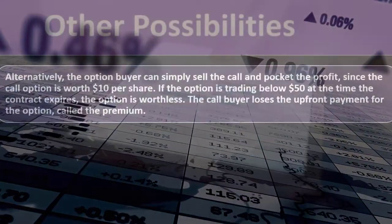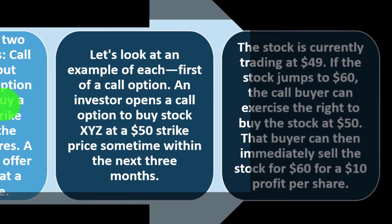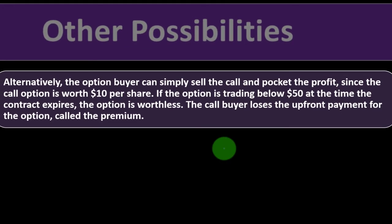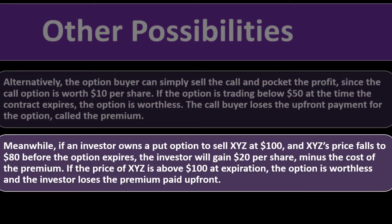If the stock is trading below $50 at the time the contract expires, the option is worthless. No one will want the option because the stock went down in price, making it useless. In that case, the call buyer loses the upfront payment for the option, called the premium.